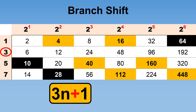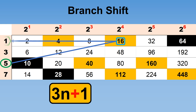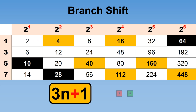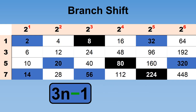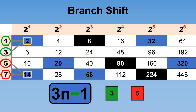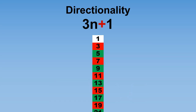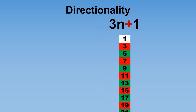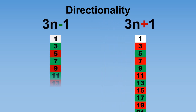Like before: 3 goes to 10, then goes to 5, and 5 goes to 16, then goes to 1. But with 3n minus 1: 3 now goes to 2, then goes to 1, and 5 goes to 14, then goes to 7. When you do compare the two equations, there is a complete change in directionality. Our question is: are our findings enough to satisfy Professor Tao? And if not, why not? With those questions answered, they lead to the next question: how are they dispersed?